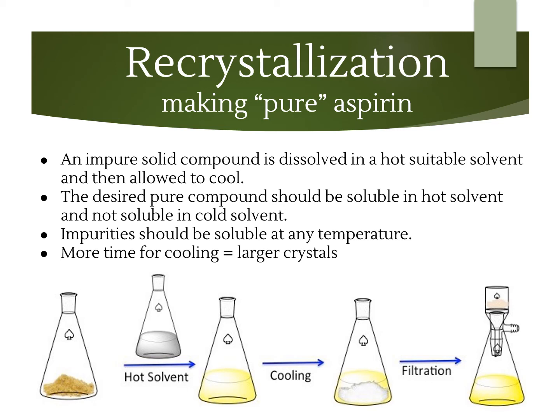What happens is you dissolve the crude aspirin in the hot solvent and then cool down the mixture. The pure compound is not going to be soluble when it's cold, so it will form a solid — like the white solid you see in the third flask in this picture. The impurities will stay in the solvent because they're soluble regardless of temperature. You can then filter off the liquid from the solid, and the solid you end up with will be very pure. We'll allow plenty of time for the mixture to cool and end up with better crystals as a result.